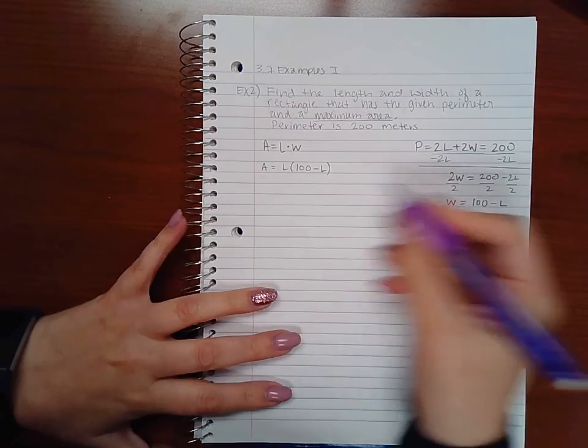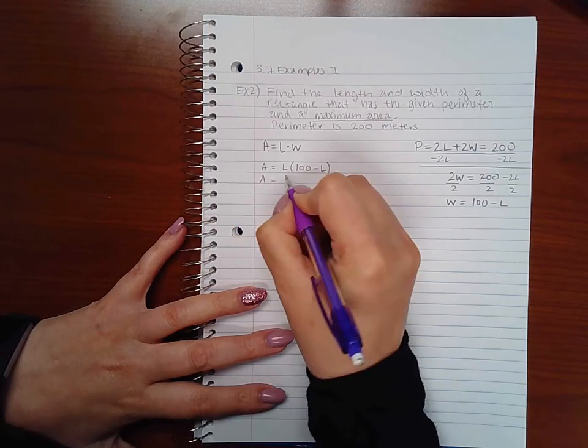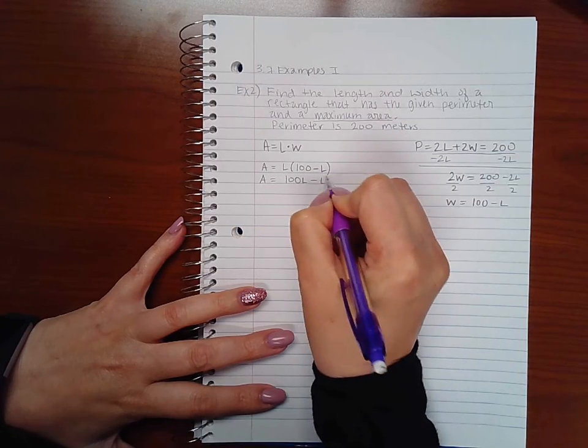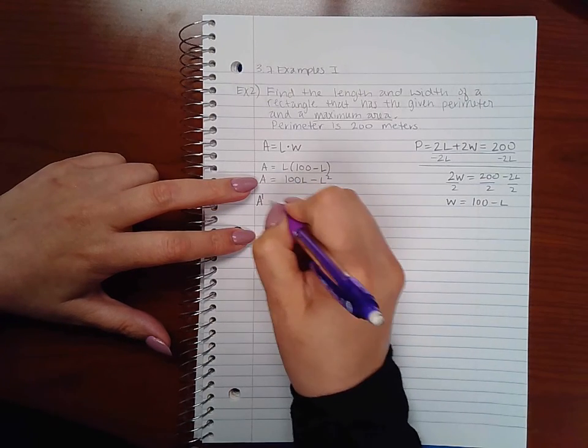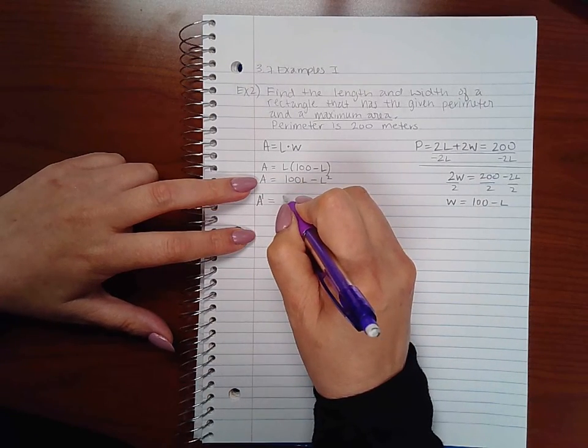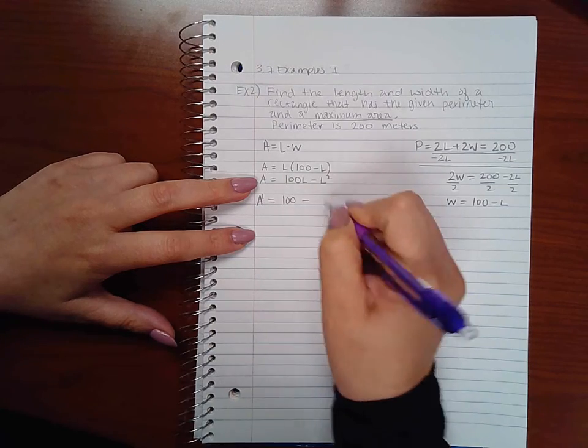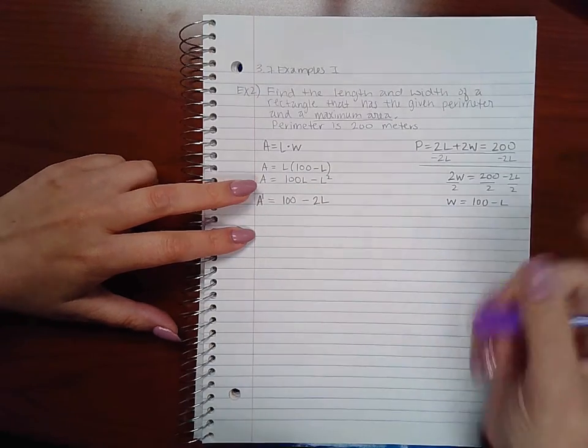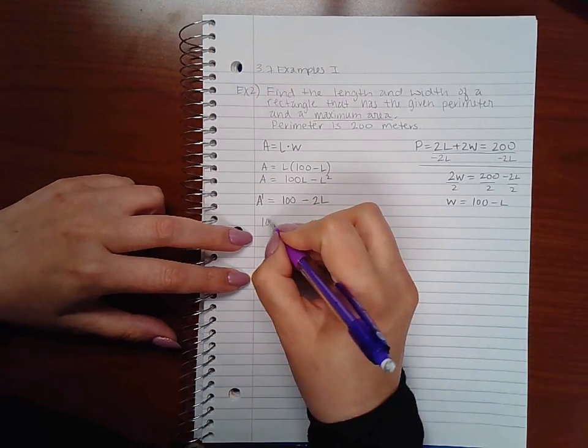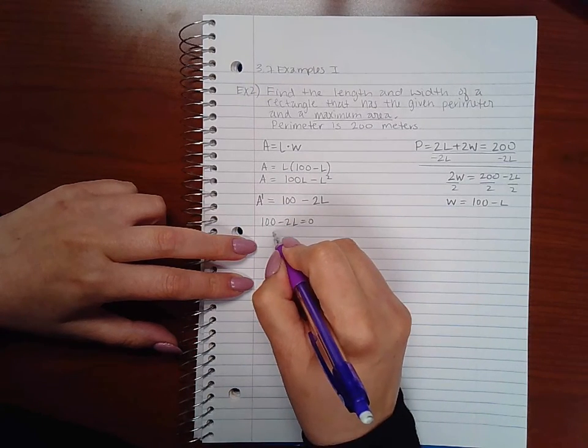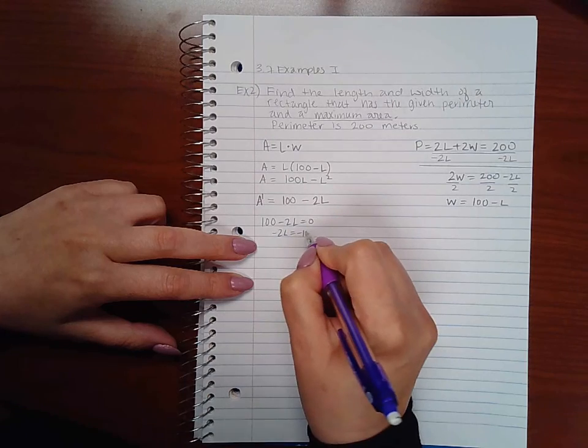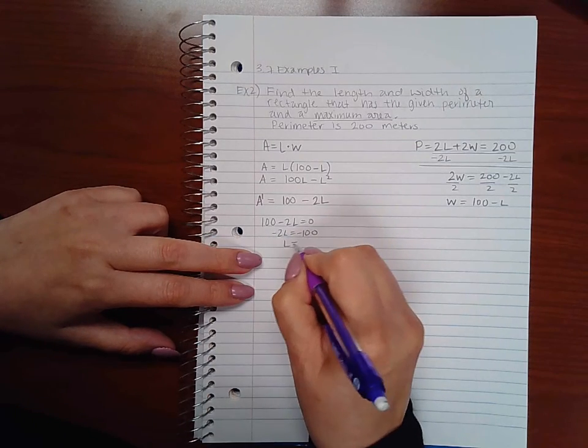I can distribute the L. And since I'm trying to maximize A, I am going to take the derivative of it. So the derivative of 100L is just 100. The derivative of L squared is 2L. If I set this equal to 0, I can minus 100 on both sides and divide by negative 2 on both sides.